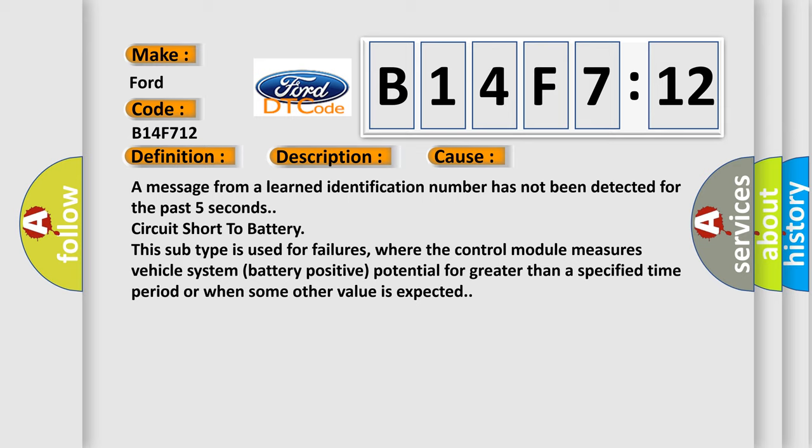Circuit short to battery. This subtype is used for failures where the control module measures vehicle system battery positive potential for greater than a specified time period or when some other value is expected.